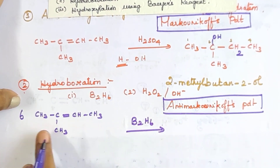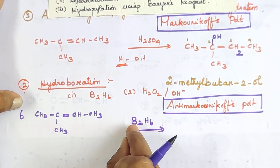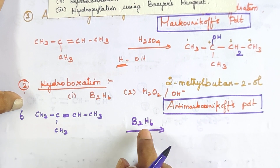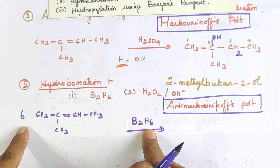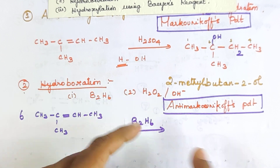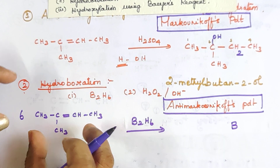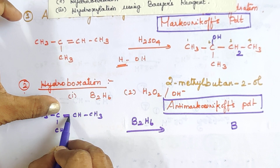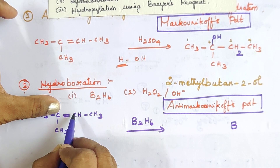B₂H₆ consists of 2 boron atoms and 6 hydrogen atoms. When diborane reacts with the alkene, the boron adds to the less substituted carbon and hydrogen adds to the more substituted carbon — this is the anti-Markovnikov addition in the first step.